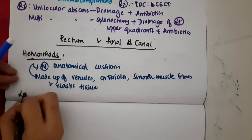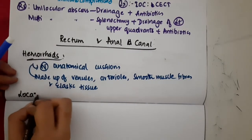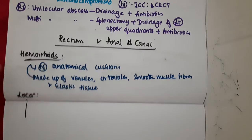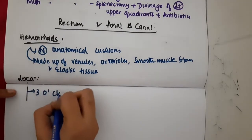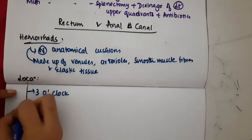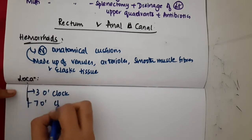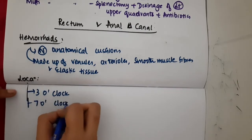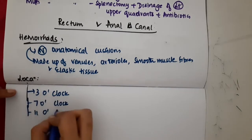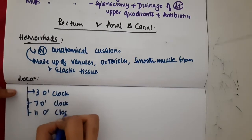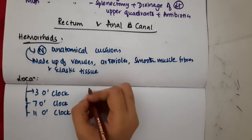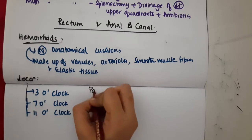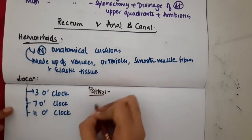What is the location of hemorrhoids? Hemorrhoids will be present in the 3 o'clock position, 7 o'clock position, and 11 o'clock position. These are where we find hemorrhoids.